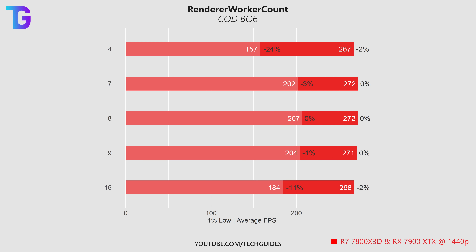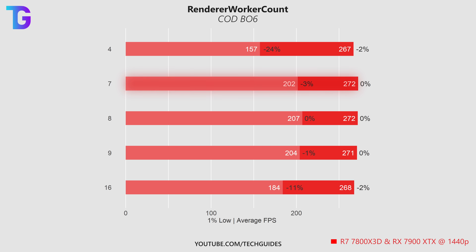Moving to my AMD-based system with an R7 7800X3D and an RX 7900 XTX at 1440p, I'm actually seeing a slight reduction in 1% lows when setting the renderer worker count to physical cores minus 1. You can also observe massive reductions in 1% lows when setting the renderer worker count to half or double the number of physical cores. So on this system, I would set the exact number of physical cores as the renderer worker count.